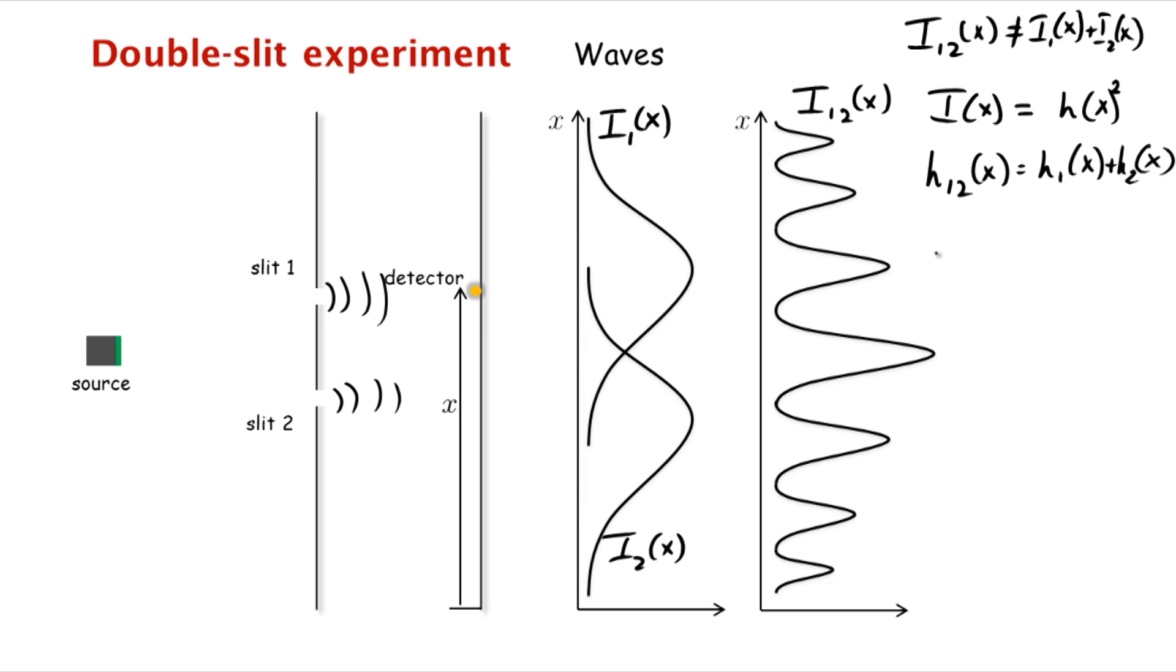So you have i12 of x when both slits are open, the energy is h12 of x squared. But this is not equal to h1 of x squared plus h2 of x squared, which was i1 of x and i2 of x.